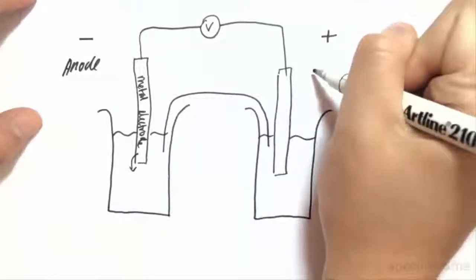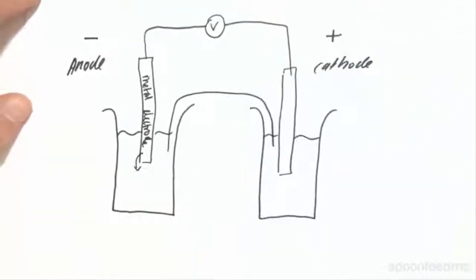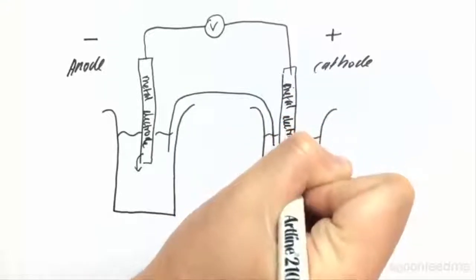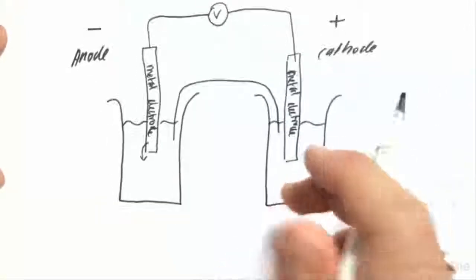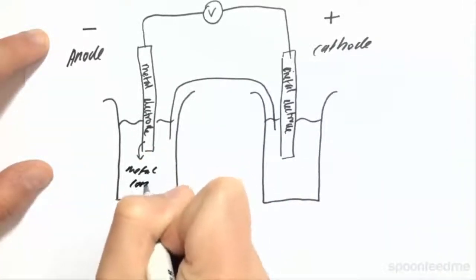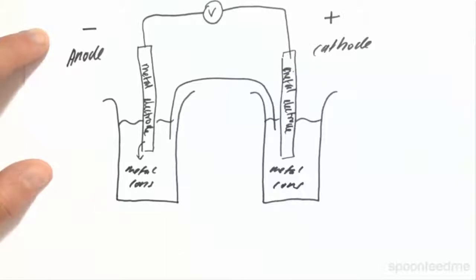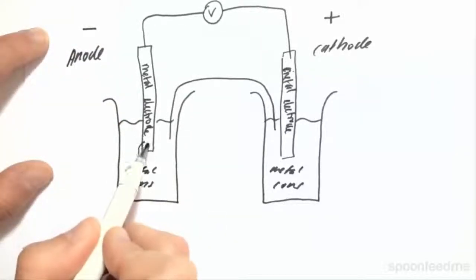This other side — the positive side — is known as the cathode. Reduction occurs here with the ions in this solution. This is also a metal electrode, and there are ions in this solution which gain electrons and become atoms and join this metal electrode. So in each cell we have these ionic solutions, and these contain the metal ions of this electrode.